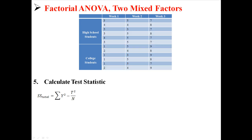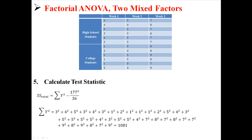Now we do sum of squares total. We already know the second part, so we just need to find the sum of all Y squared. We take each individual score, square it, and add them all together. When I do that I get 1,081. Putting that into the equation, I find a sum of squares total of 210.75.